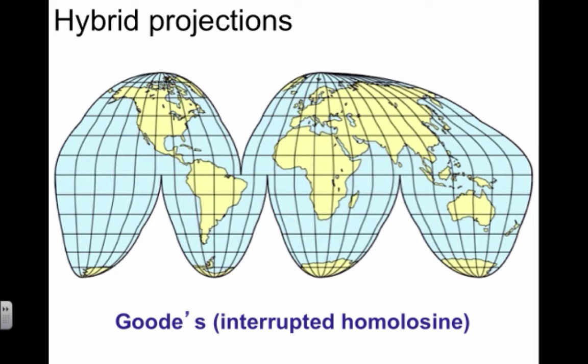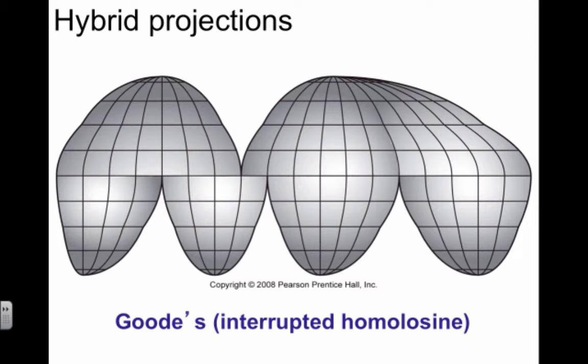This is a Goode's interrupted homolosine map. It's like peeling an apple—you take the skin off and flatten it out. The area of landforms is preserved by cutting into areas of water where you have fewer people. You can see where distortion is greater.